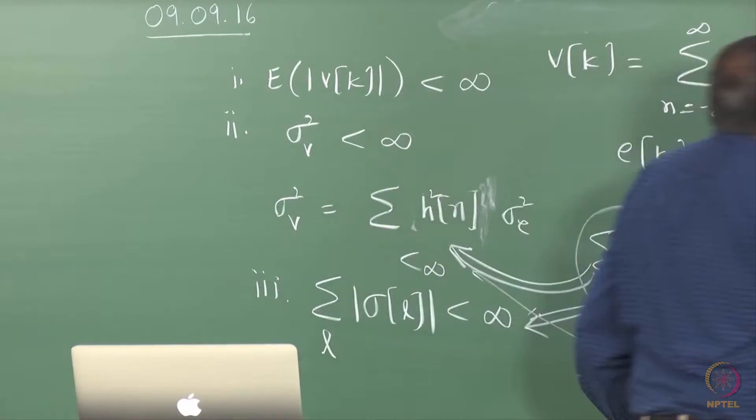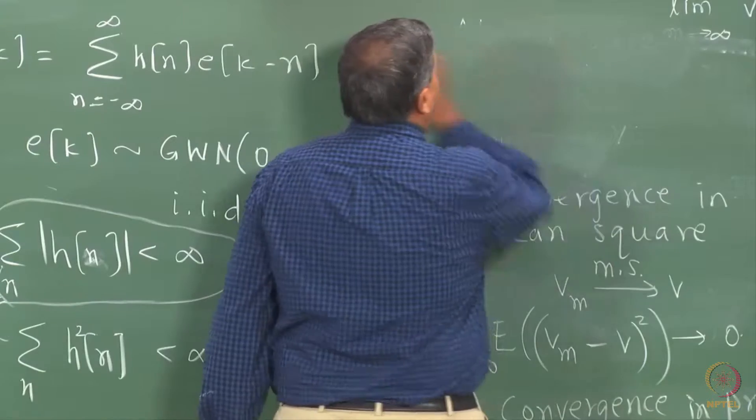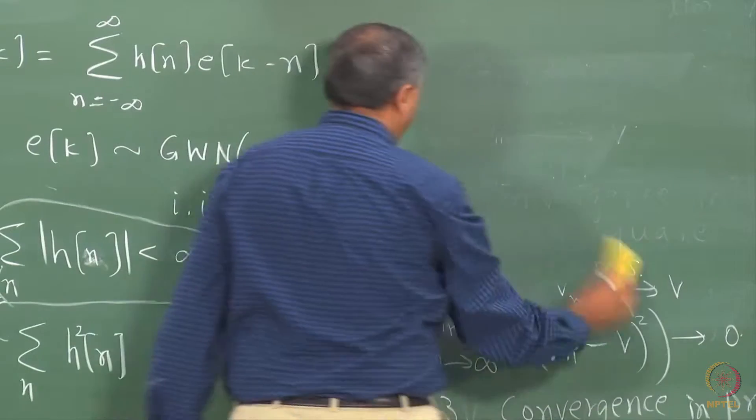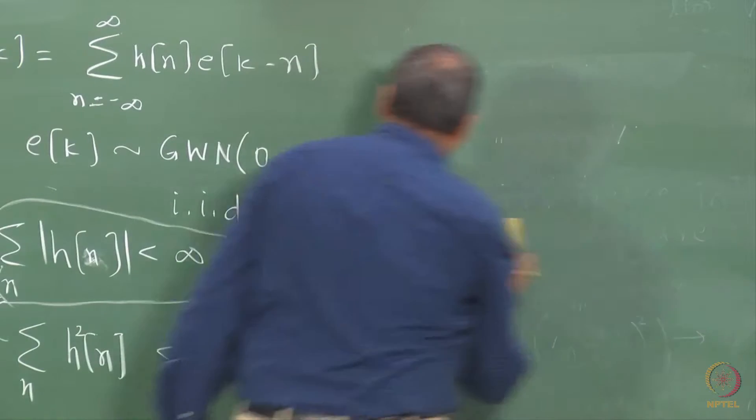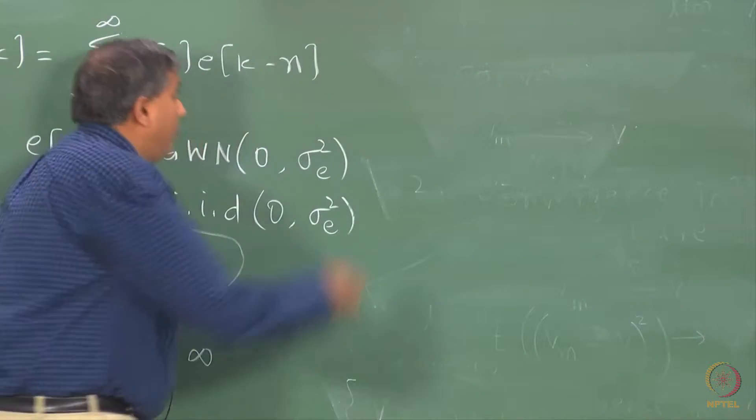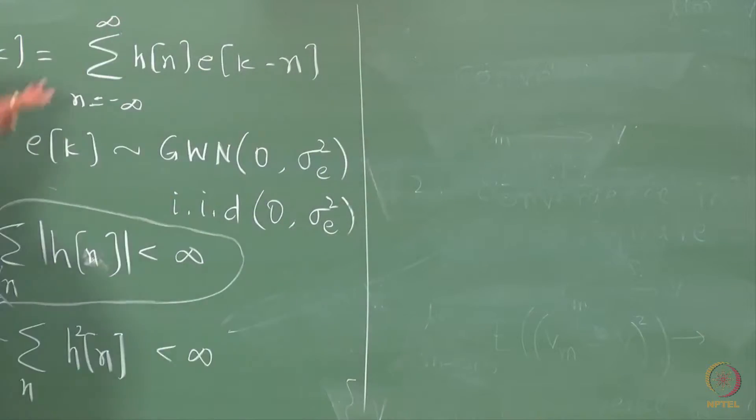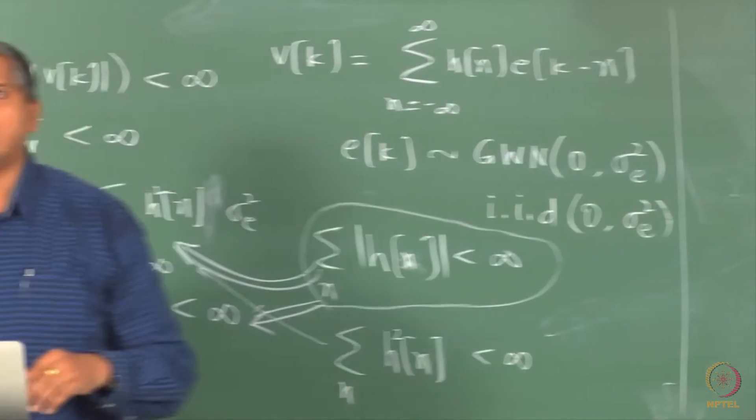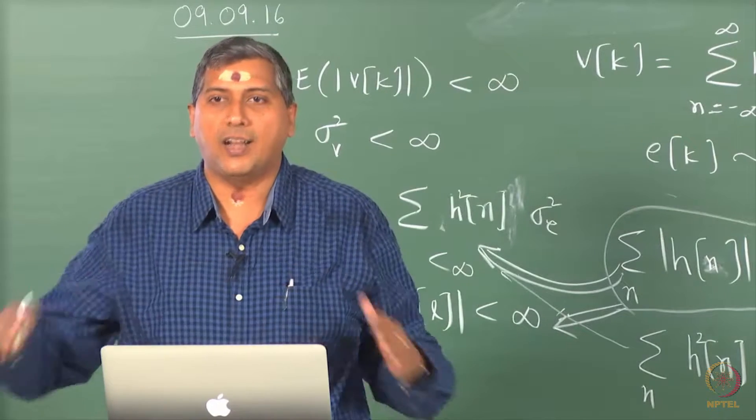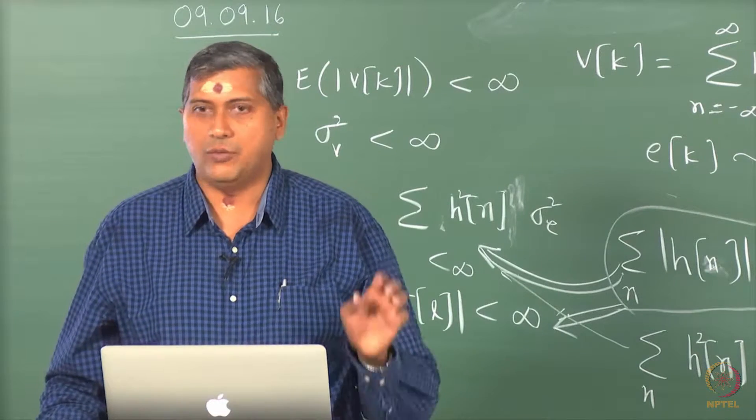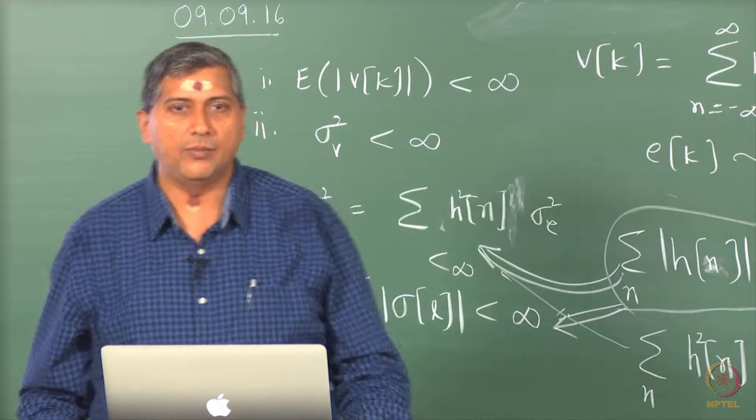Very quickly let us talk about moving average models. I just want to talk about invertibility because we have already seen moving average models. Now, this is your general definition of linear random process and at this point we branch off into two special classes of models as we have seen already: moving average and autoregressive.